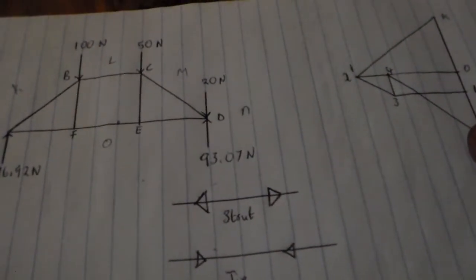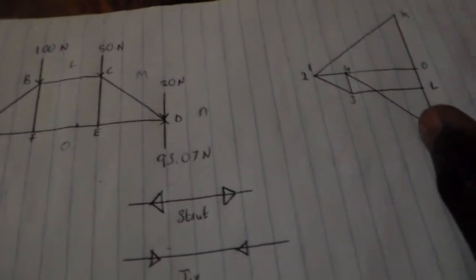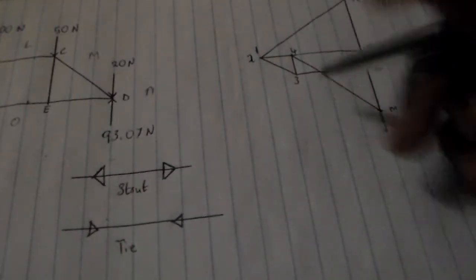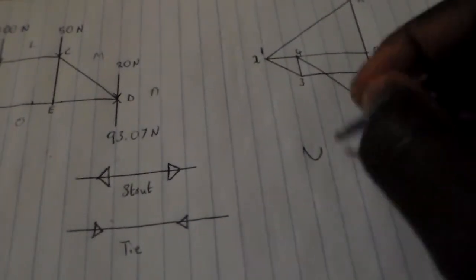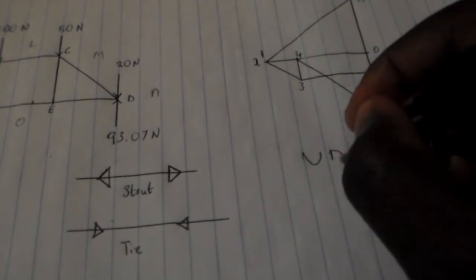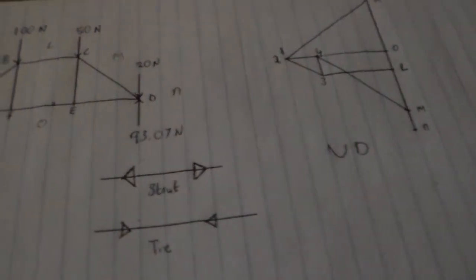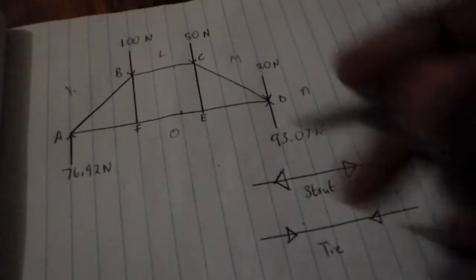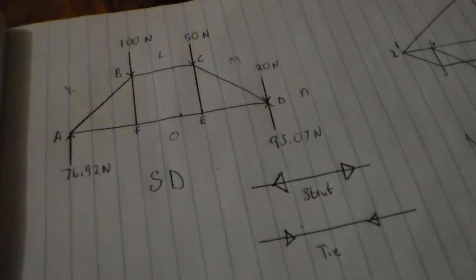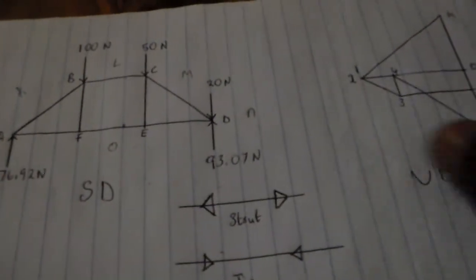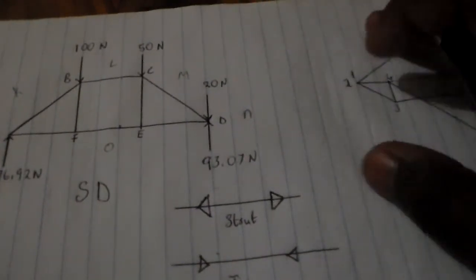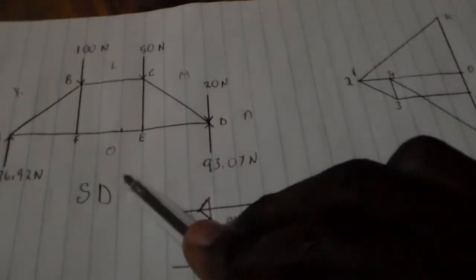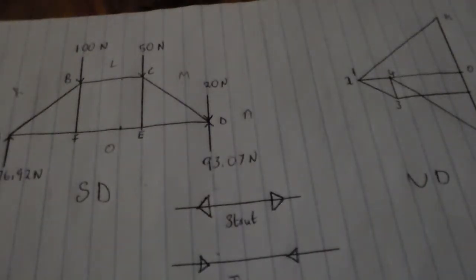To determine if a member is a tie or a strut, we first draw the vector diagram — this is our vector diagram, labeled 'V dim'. We also need to check our space diagram, labeled 'S D'. This vector diagram corresponds to the space diagram shown here.